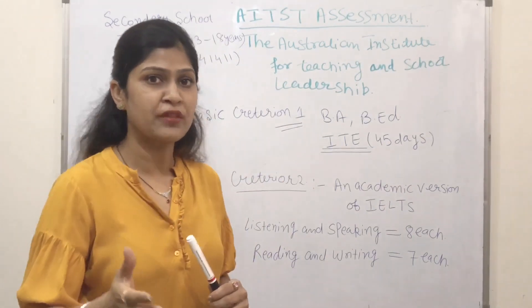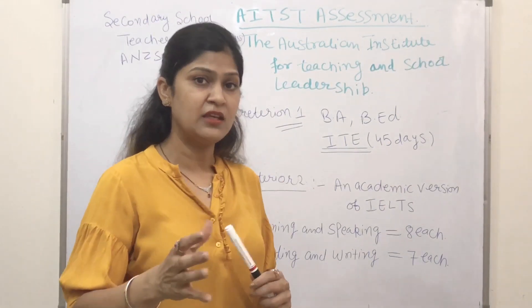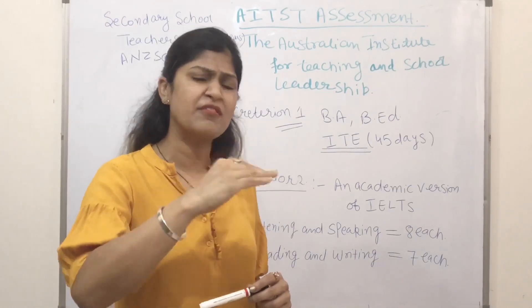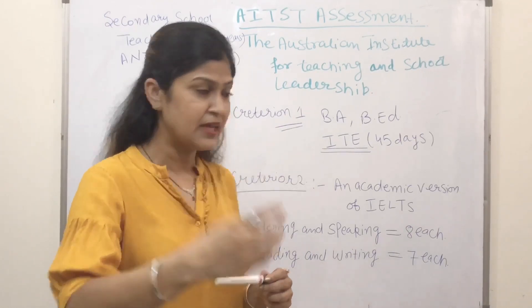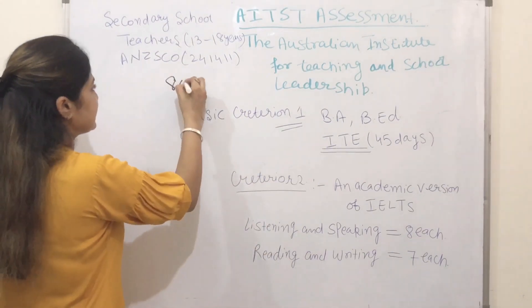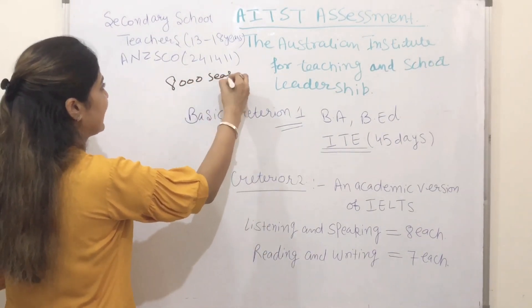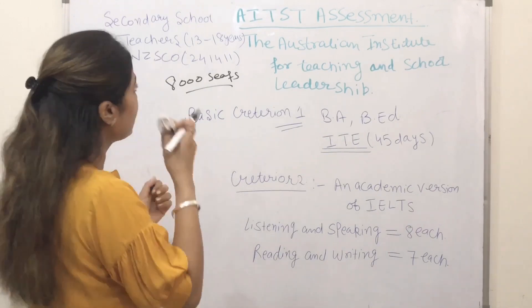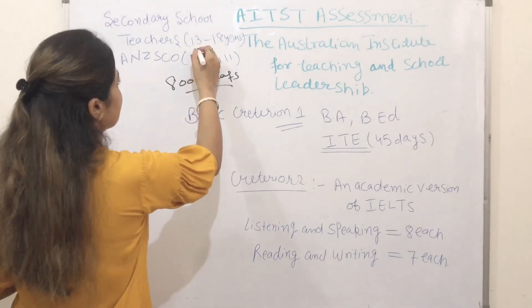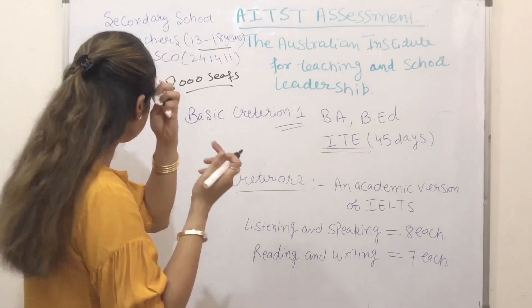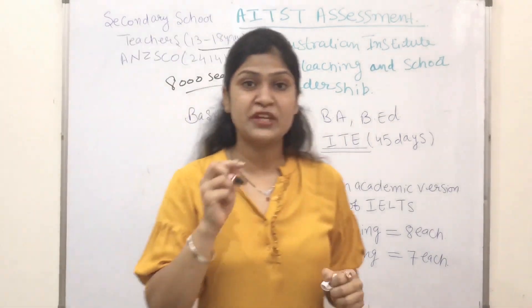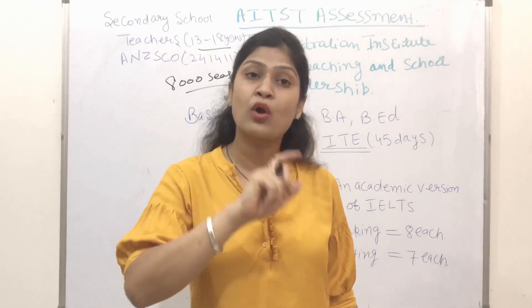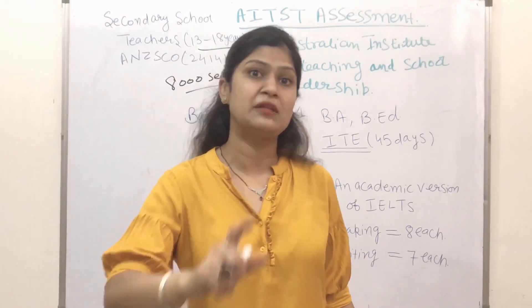We have seen the Occupation Ceiling List, in which secondary school teachers have increased by more than 8,000. The secondary school teachers ceiling has increased for those in the 13 to 18 years age group. I will tell you how secondary school teachers can apply for Australian PR.